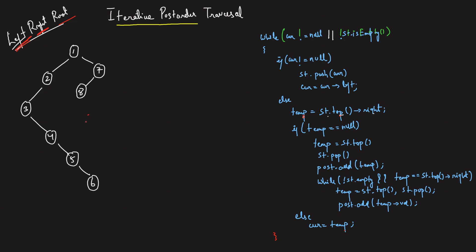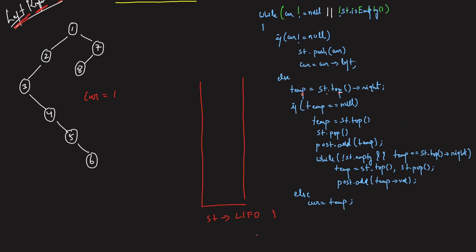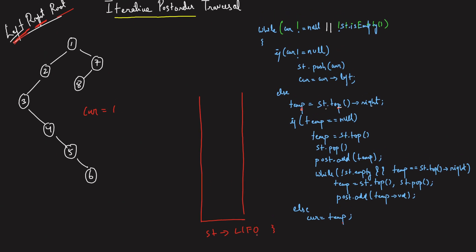So what you will start with is you will take a curr pointer pointing to the root of the node. And you'll take a stack — a last-in-first-out data structure. Take an empty stack and start the traversal, trying to go as left as possible. So when you start, the curr has to be not null or the stack has to be non-empty. Curr is one, which is the root — curr is not null, first condition.